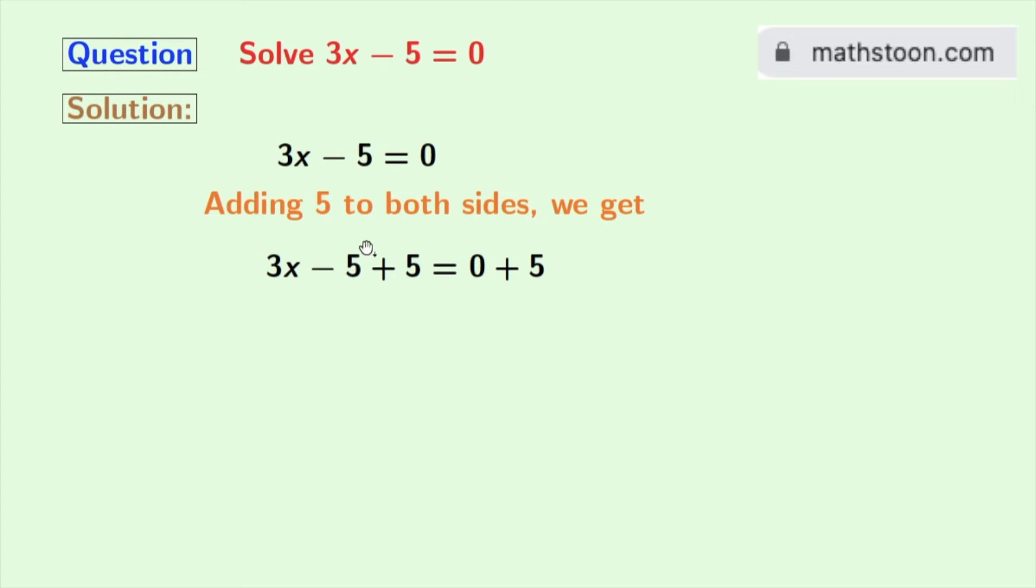Look that in the left hand side we have minus 5 plus 5 which is 0. So we are left with 3x in the left hand side and in the right hand side, 0 plus 5 means 5.